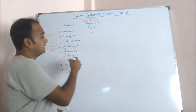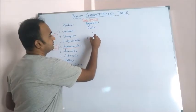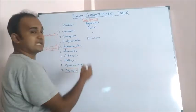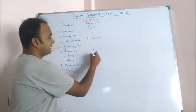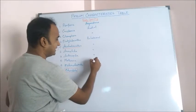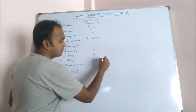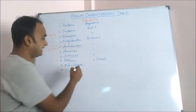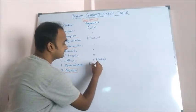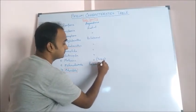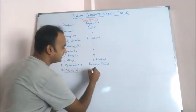In Platyhelminthes bilateral symmetry can be found. In Aschelminthes bilateral, Annelida bilateral, Arthropoda bilateral, Mollusca bilateral. Here torsion can also be found. Echinodermata pentameric radial symmetry. And in Chordata again bilateral symmetry.